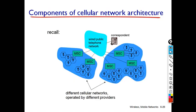We will recall the cellular network. The cellular network contains BTS and MSC, and all these MSCs are connected to the public telephone network. When our correspondent wants to call, the call is routed through the public telephone network through the MSC to the mobile device.